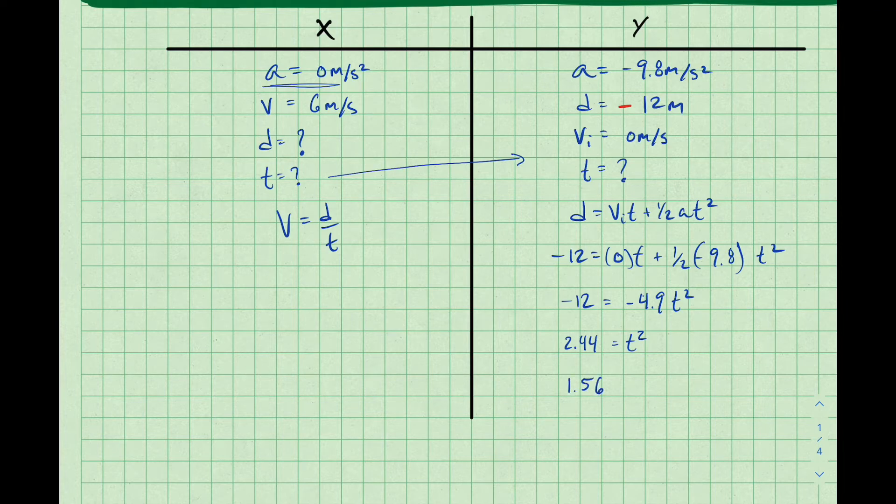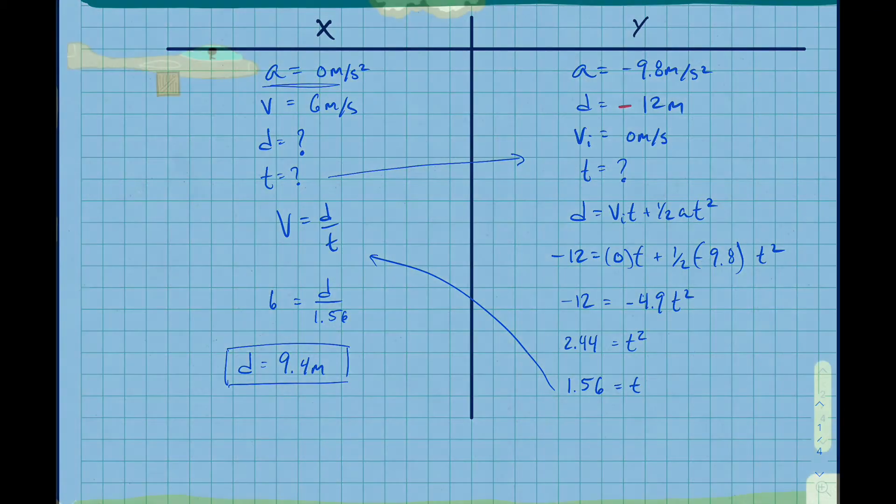So we need to now take the square root to get our actual time. Once we get that actual time of 1.56 seconds, we can then move it back over to the x side and substitute it in. So we have 6 equals d over 1.56. Substituting those in, doing some algebra, multiplying both sides by 1.56, we get 9.4 is our distance that the bear will be landing.